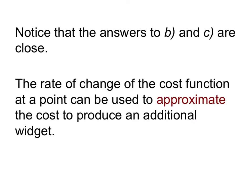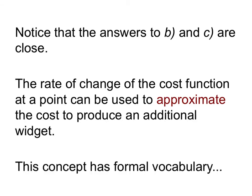We've noticed that the cost for the 201st widget at $313.91 is very close to the rate of change at a production level of 200 widgets, which was $314. It turns out that we're on to something. The rate of change of the cost function at a point can be used to approximate the cost to produce an additional widget. And this isn't just an accident. This concept has a formal vocabulary, which we're going to discuss next.